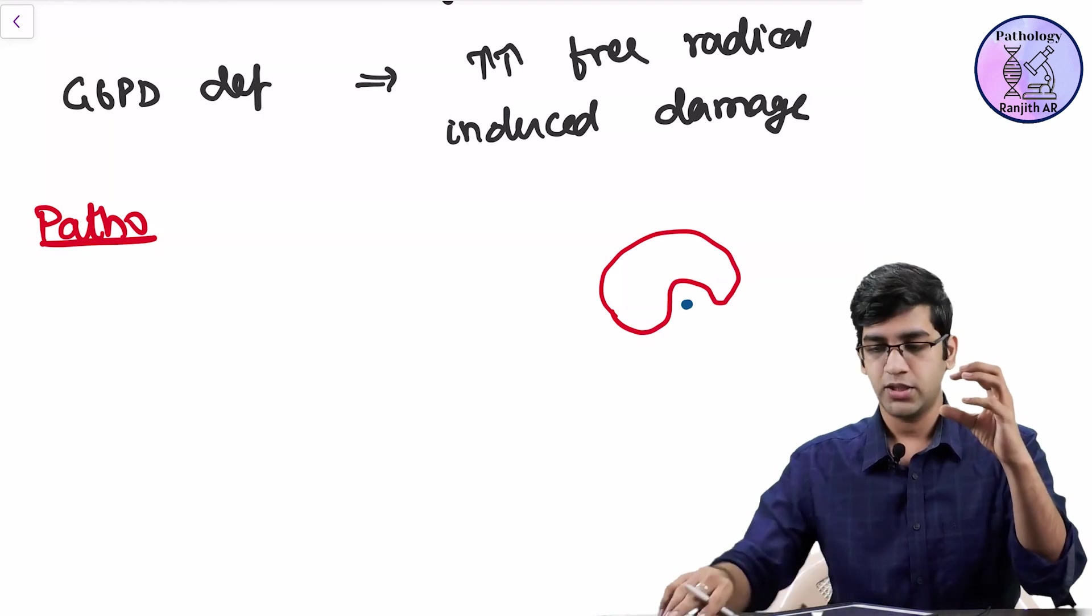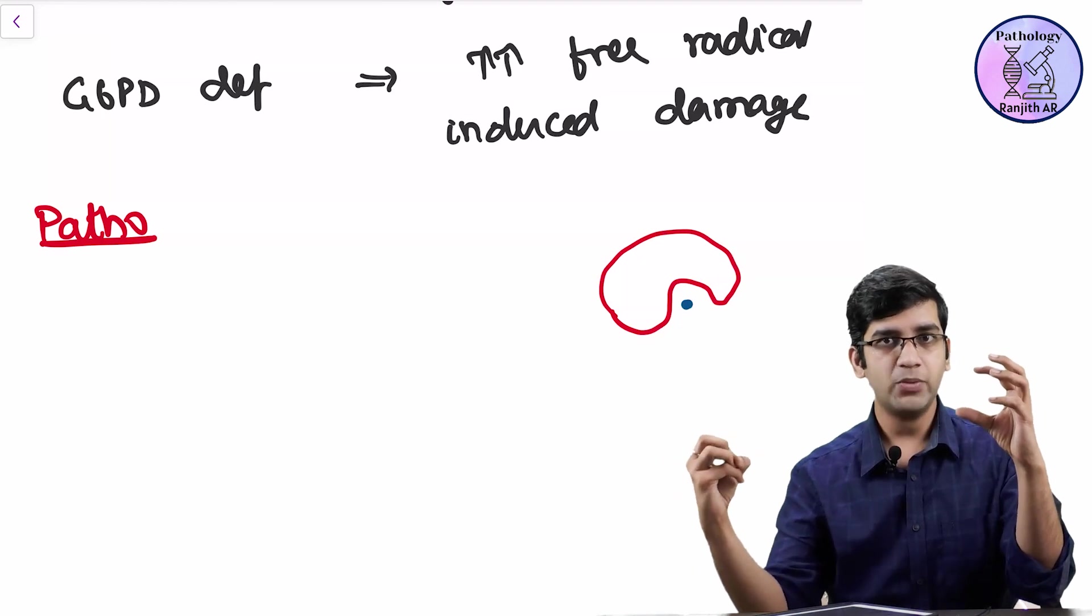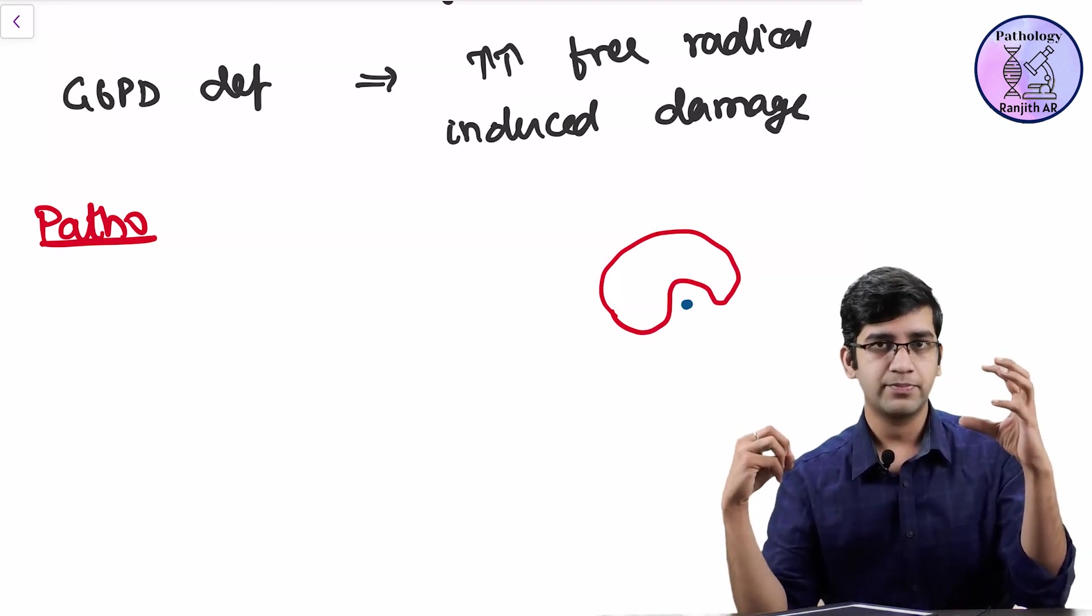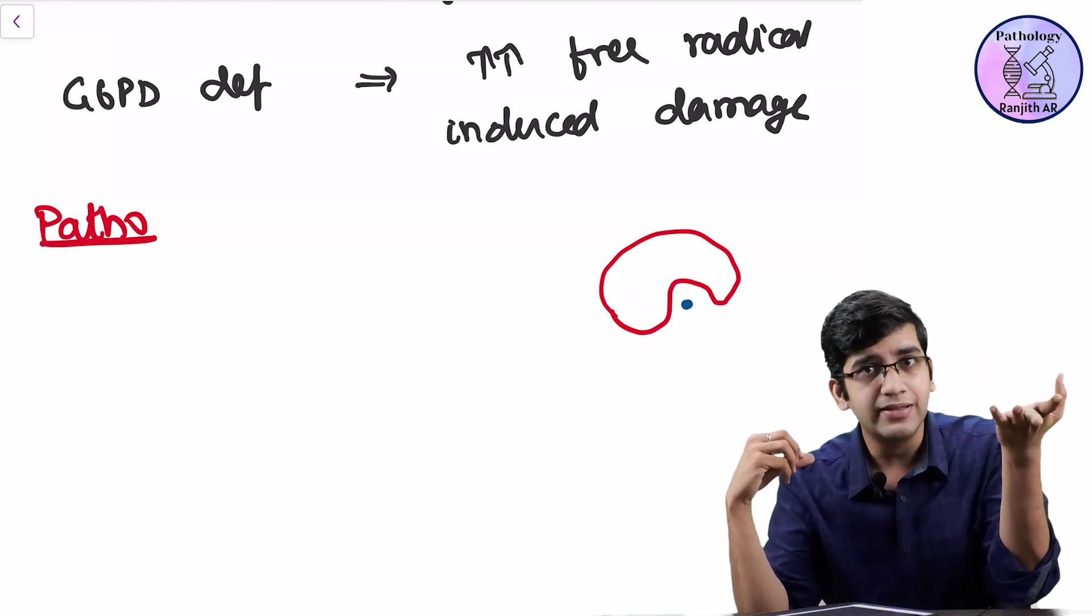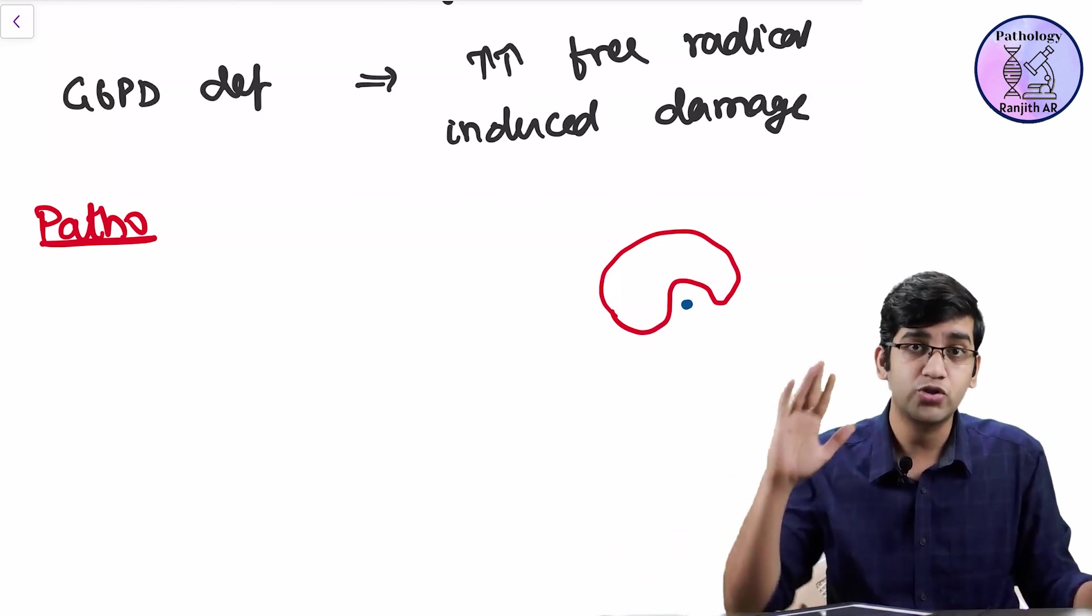My RBC goes like this. What Robbins says is my splenic macrophages comes in, bites it off and removes it. Tell me one thing. If it bites it off and removes it, will the membrane be damaged? Yes. If the membrane is damaged, is this cell alive or dead? Dead. How will a dead cell circulate? So it is wrong. It was thought so.